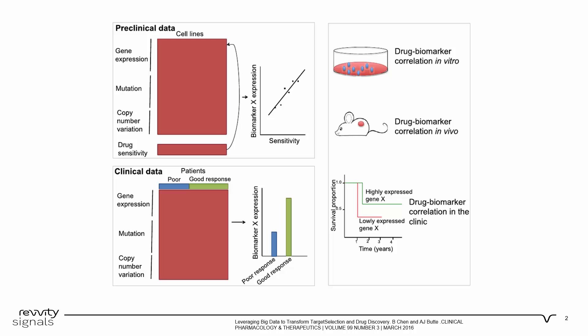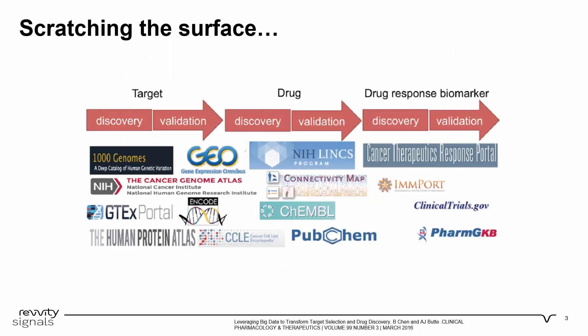Advances of genomics, sequencing, and high-throughput technologies have led to the creation of large volumes of diverse data sets for drug discovery. Analyzing these data sets to better understand disease and discover new drugs is key. Open data initiatives in basic and clinical research have dramatically increased the types of data available to the public. In the past few years, we have witnessed successful use of big data in many sectors across the whole drug discovery pipeline.